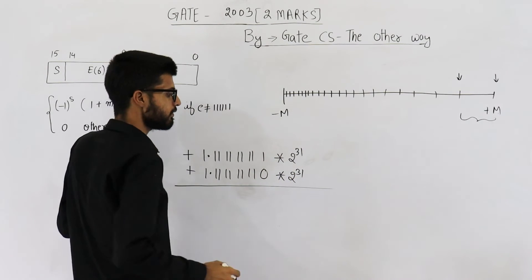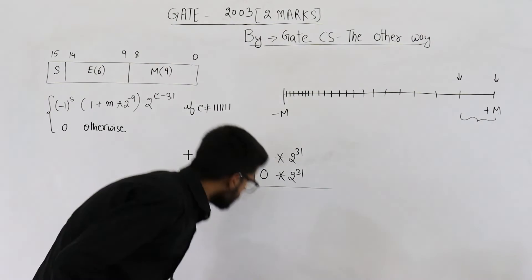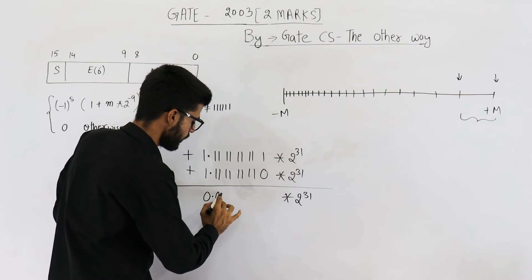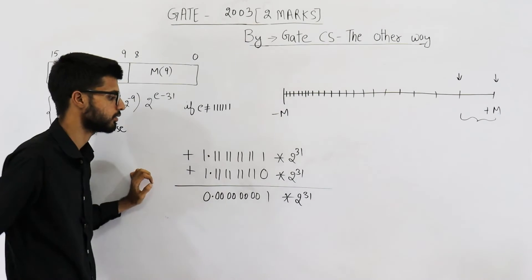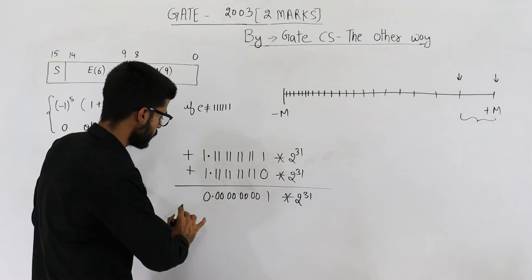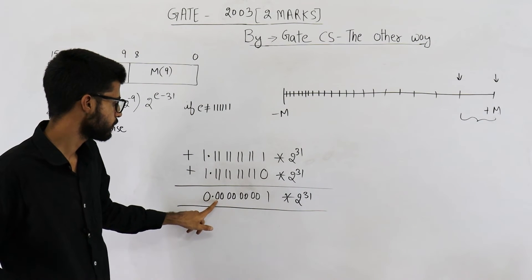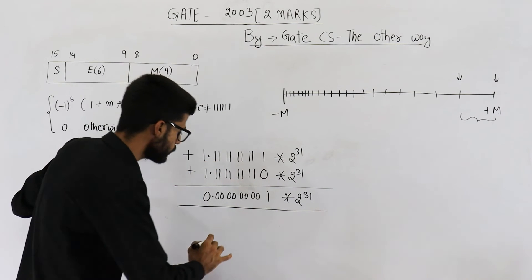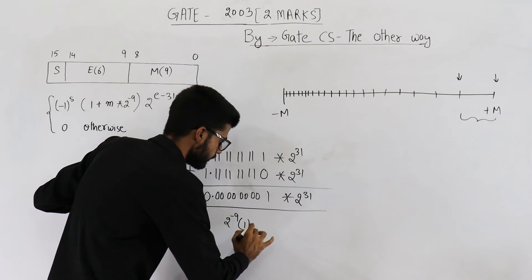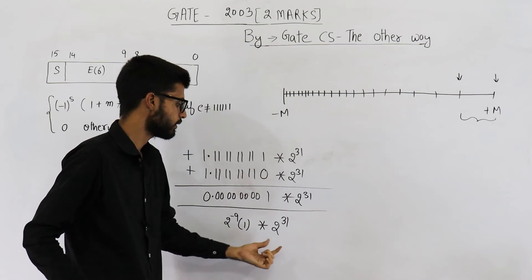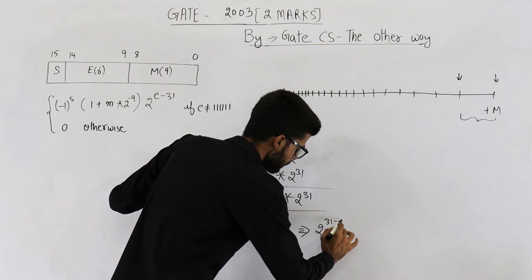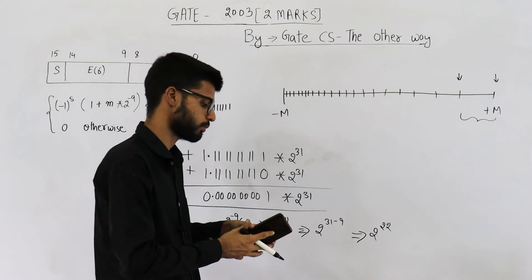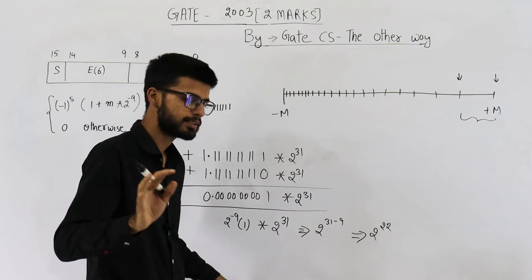We can take 2^31 as a common factor. Subtracting the mantissas gives 0.000000001 in binary. The weight of the last bit position is 2^(-9). So the difference is 2^(-9) × 2^31 = 2^(31−9) = 2^22. Option C is 2^22, which is the answer.